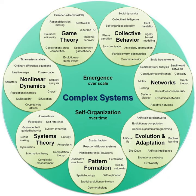A complex system is a system composed of many components which may interact with each other. Examples of complex systems are Earth's global climate, organisms, the human brain, infrastructure such as power grid, transportation or communication systems, social and economic organizations like cities, an ecosystem, a living cell, and ultimately the entire universe.